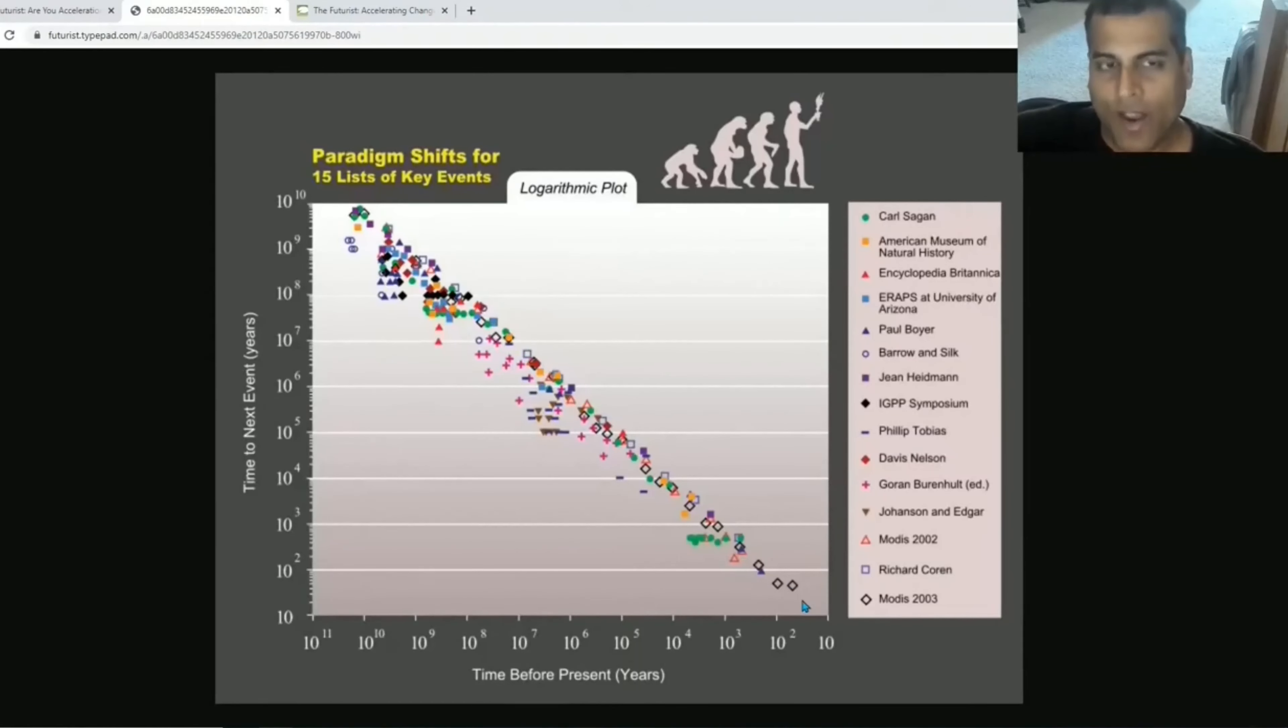What is remarkable is how all of them converge around an indisputable trend of accelerating rate of change. Bigger and bigger events are happening closer and closer together. This is evident across evolution, paleontology, economics, science, technology, and everything. All these 15 or so different sources corroborate evidence of an accelerating rate of change. Now this chart is from 2005 and it definitely needs to be updated. Since 2005, there have been a number of important historical events.